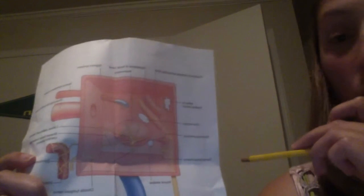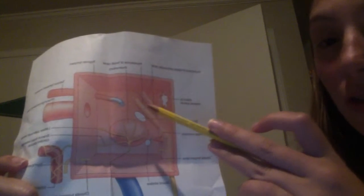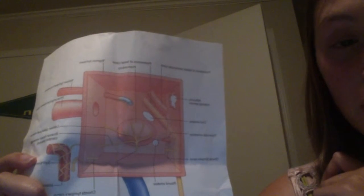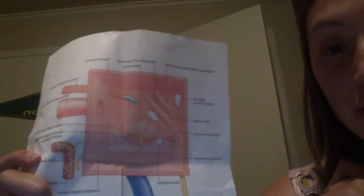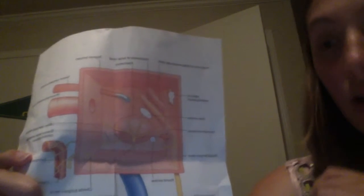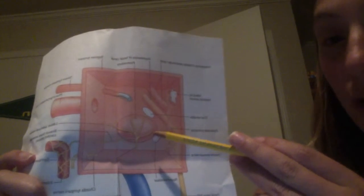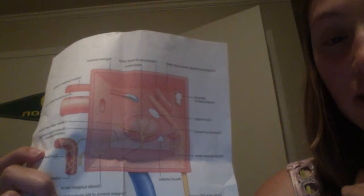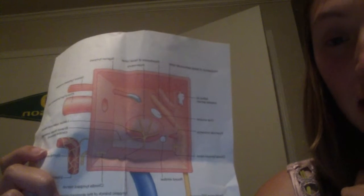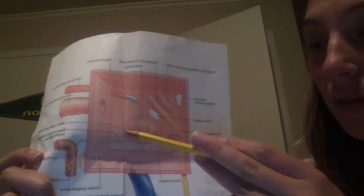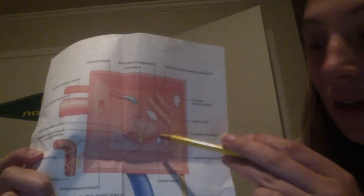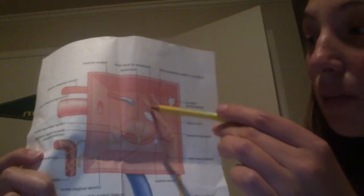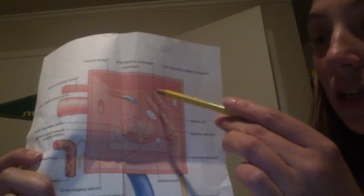On the medial wall, we have the oval window. The oval window contains the footplate of the stapes. It's a small membrane allowing the footplate access to the inner ear fluids to stimulate motion. We also have the round window down here, which is the membrane with access to the basal turn of the scala tympani of the cochlea. We also have the promontory, and the prominence of the facial cranial nerve, and the prominence of the lateral semicircular canal.